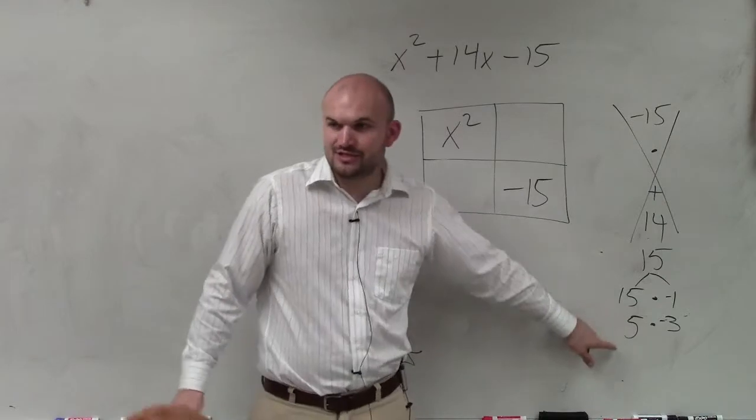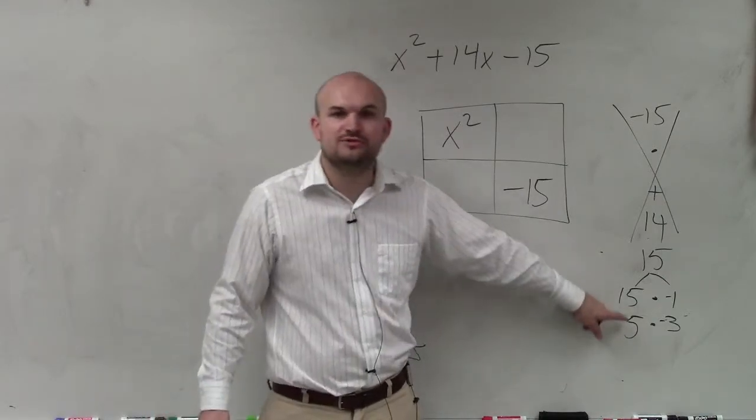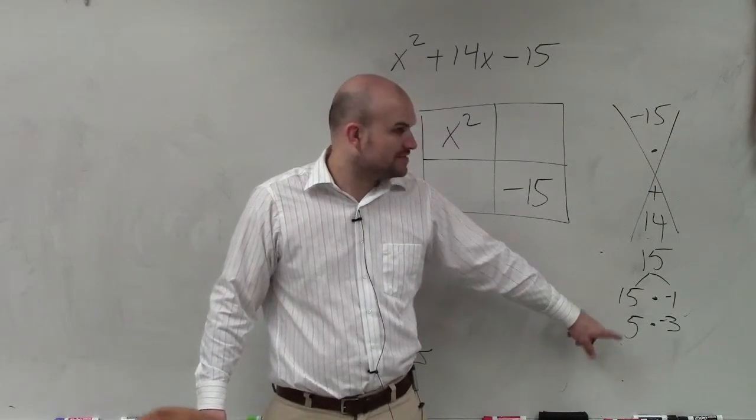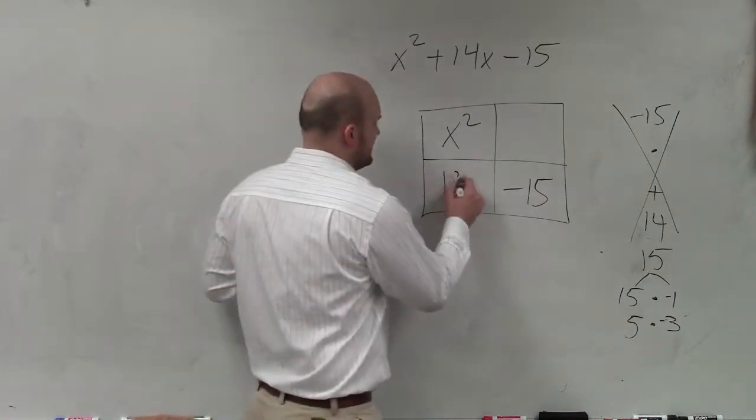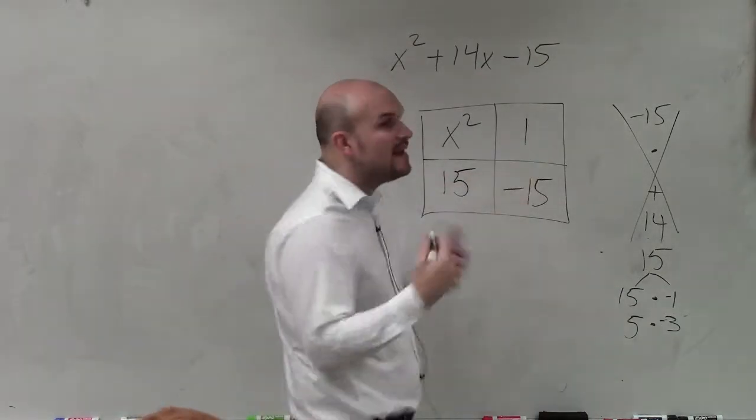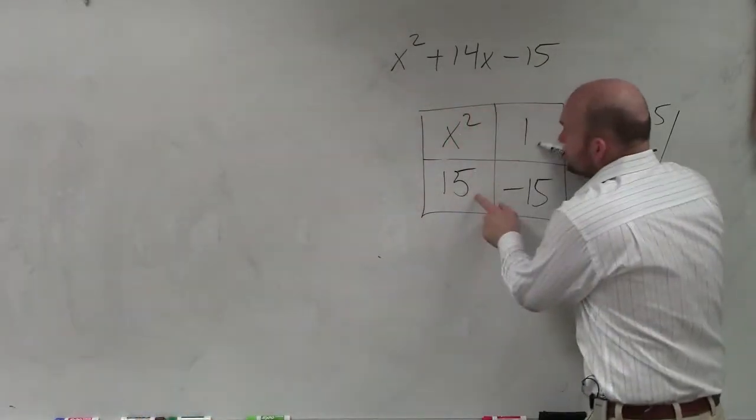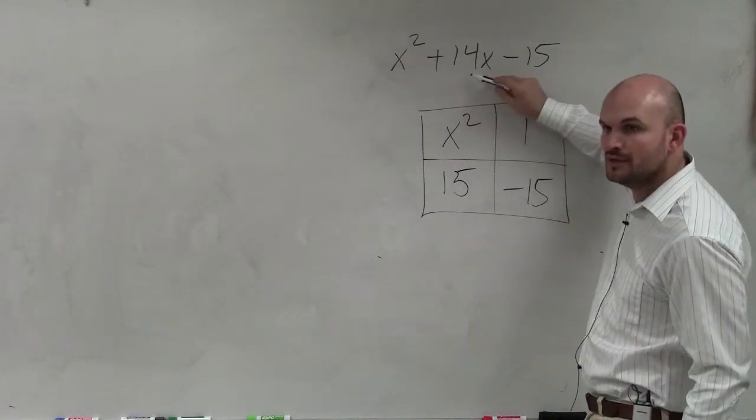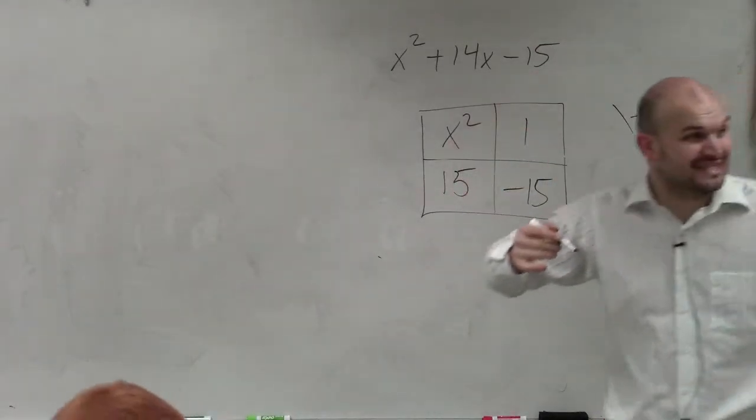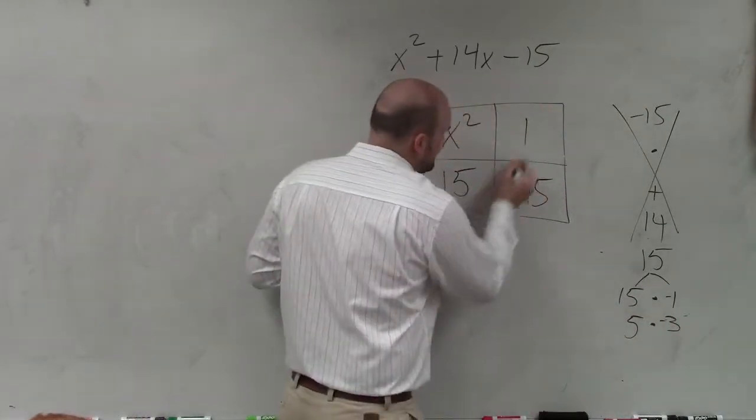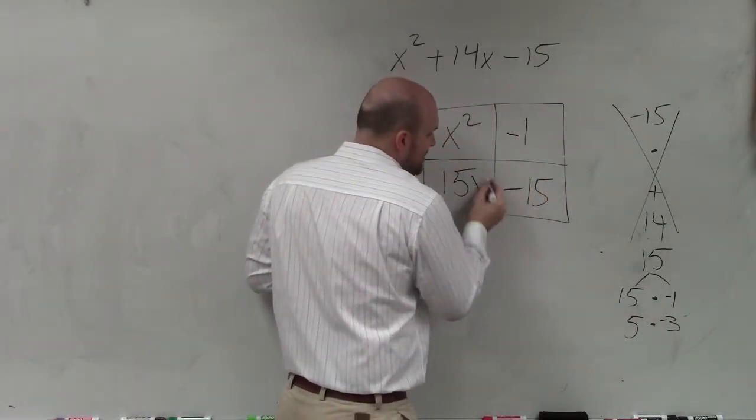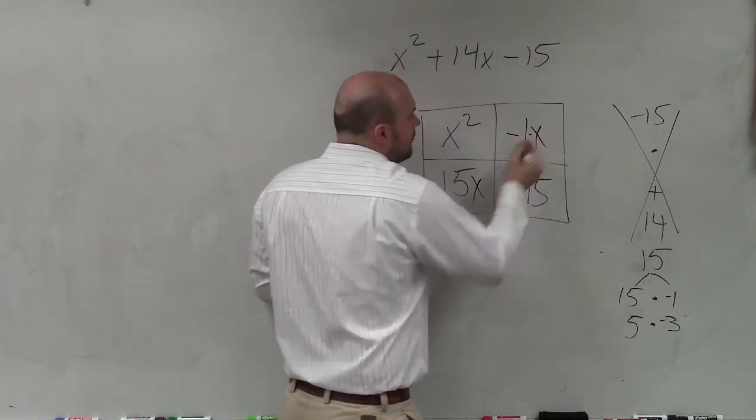So out of these two factors, what are the only two that add up to give me a positive 14? 15 and 1. Now, remember that these two boxes represent my middle term. So when I combine them, they need to represent 14x. So that needs to be negative 1, right? That needs to represent 15 and negative 1x.